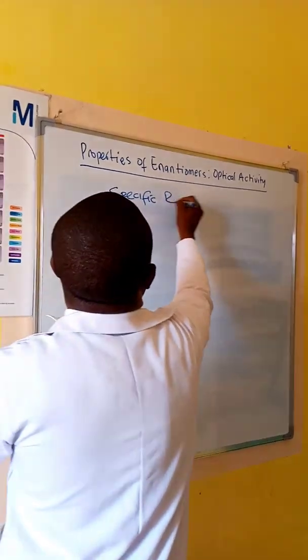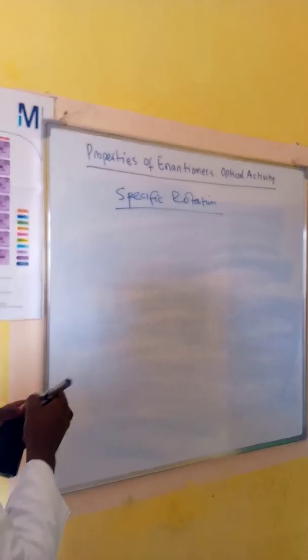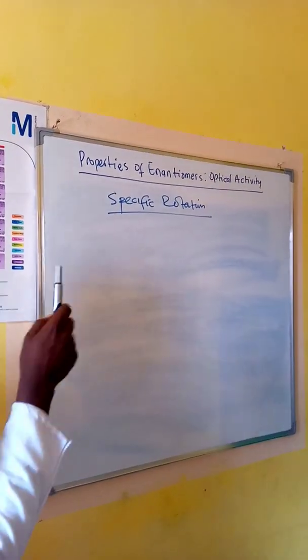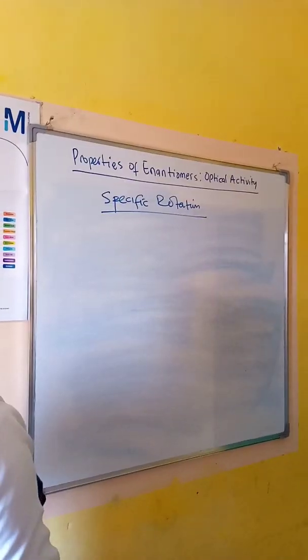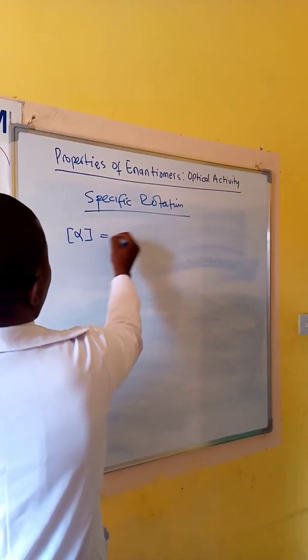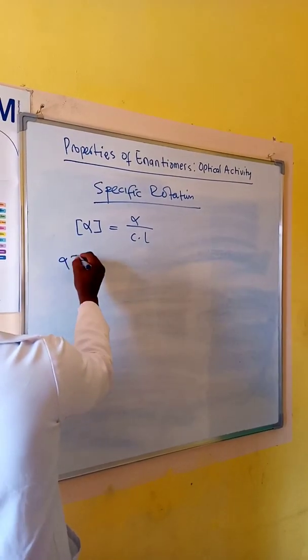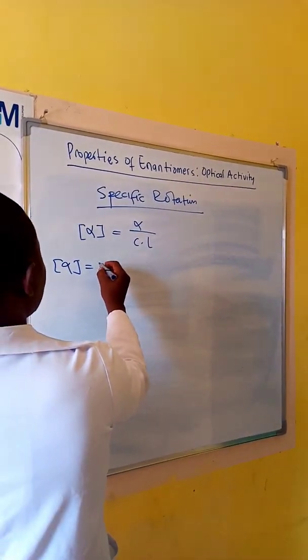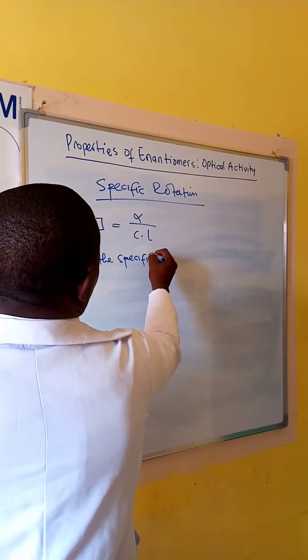Specific rotation is the number of degrees by which the plane of polarization is rotated as it passes through the solution of an enantiomer. Specific rotation is given by a formula.